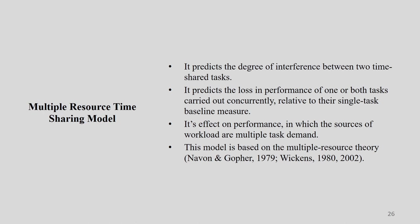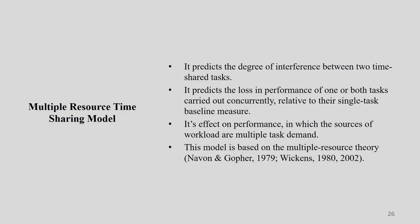The model predicts the degree of interference between two time-shared tasks. If there are two tasks that both need to be completed within a single time period, it helps us understand what varieties of interference exist. It predicts the loss of performance of one or both tasks carried out concurrently, relative to their single-task baseline measure.